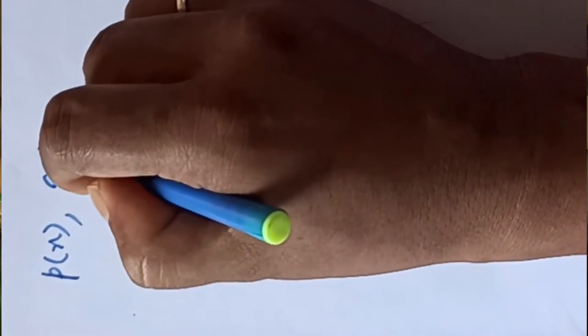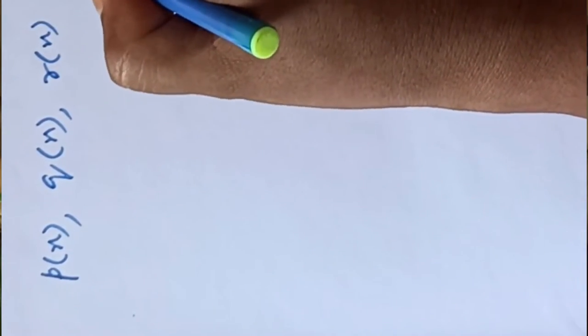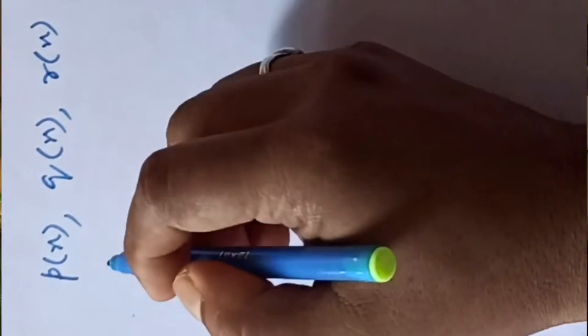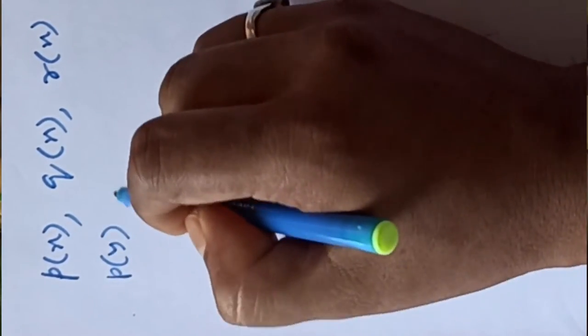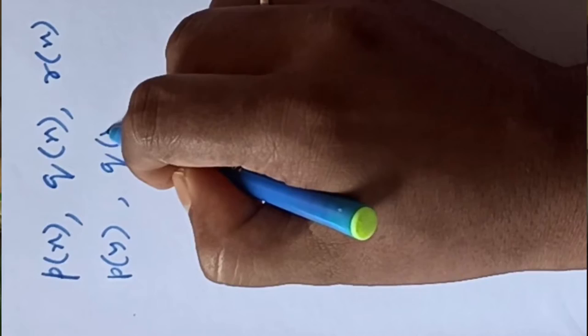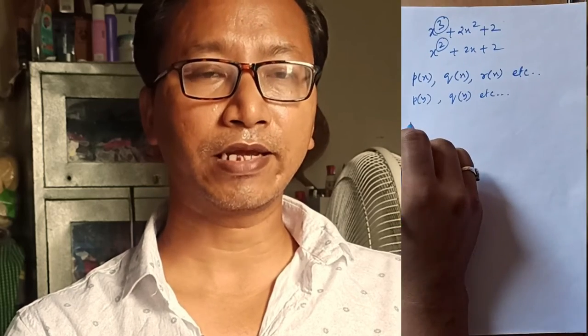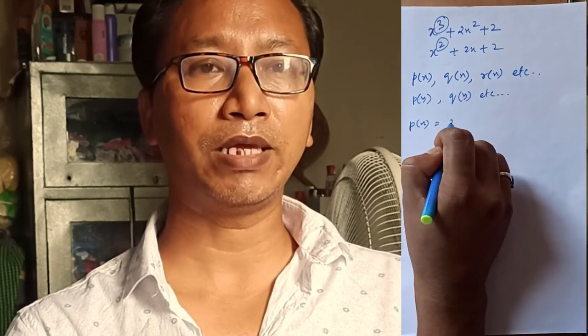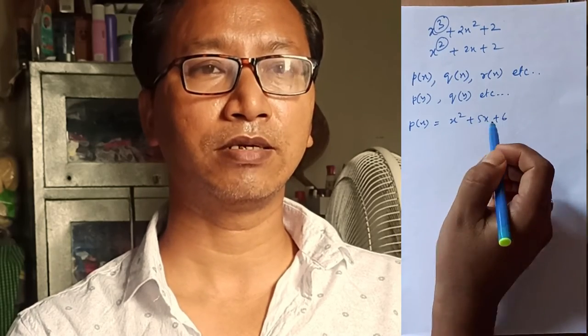Next, how we write a polynomial. If the variable of the polynomial is x then we write p(x), q(x), r(x), and so on. If the polynomial consists of the variable y then we write p(y), q(y), etc. Now let us take the polynomial p(x) as x squared plus 5x plus 6.